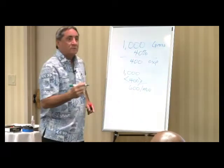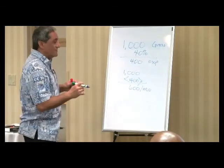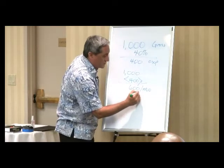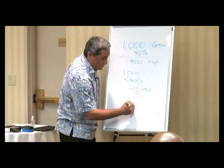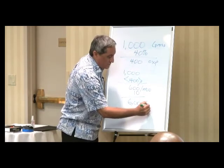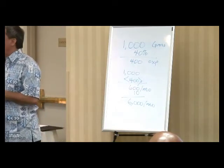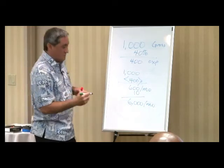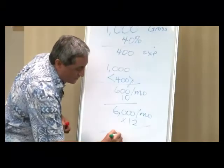How many units do we have? 10. Each one is bringing in $600, so we multiply by 10 — just add a zero to 600 — giving us $6,000 per month. That sounds like a lot, and that's per month. For a year, multiply by 12, and we get $72,000 per year.